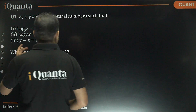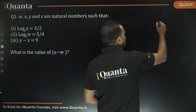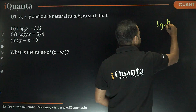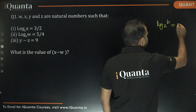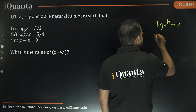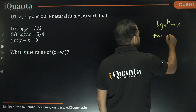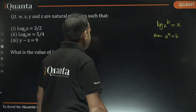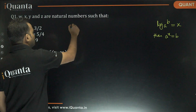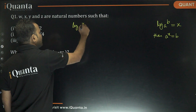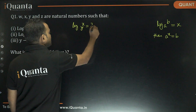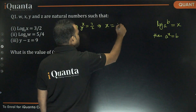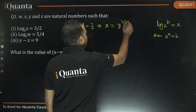To solve this, we need to know a little basic of log: if log B base A is equal to X, then A to the power X will be equal to B. Now, log X base Y is equal to 3 by 2, so we can say that X is equal to Y to the power 3 by 2.